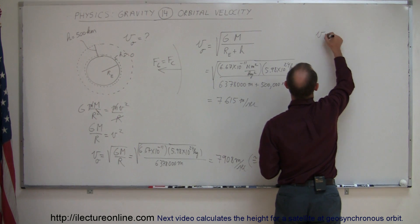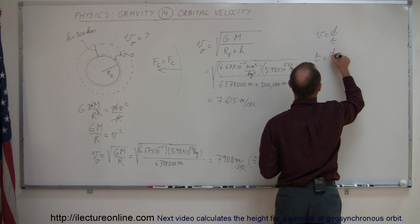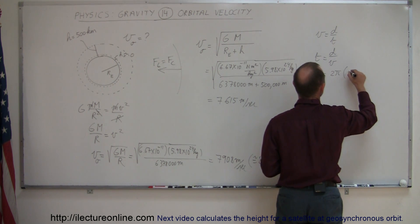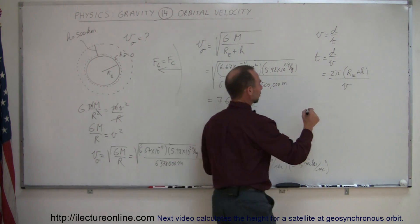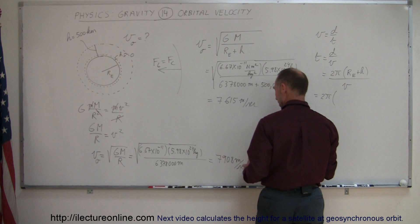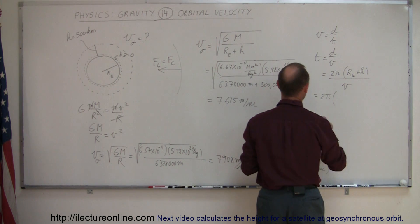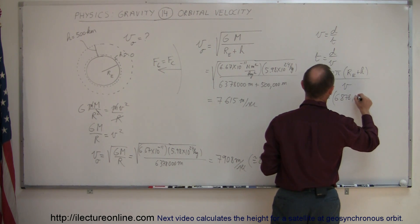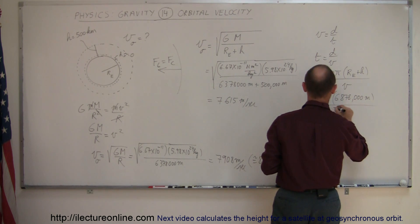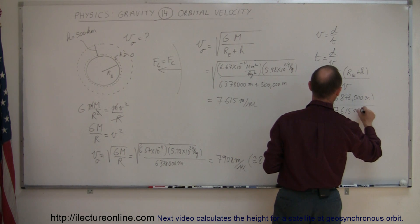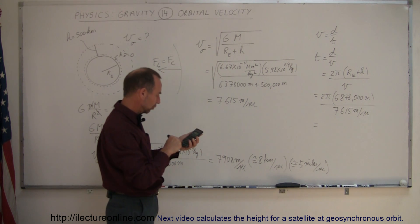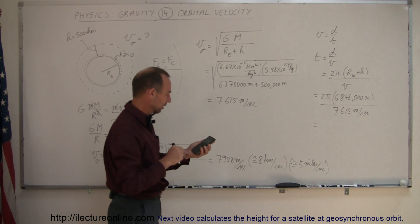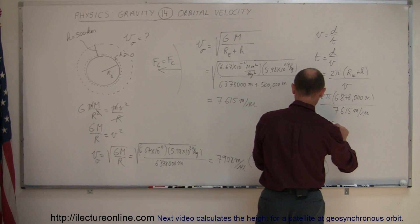We can say that velocity is equal to distance divided by time, which means that time is equal to distance divided by velocity. The distance would be 2 pi times the radius - in this case the radius of the Earth plus the height of the orbit - divided by its velocity. We can plug in the numbers here. This would be equal to 2 pi times the total radius, the sum of those two right there, so it would be 6,878,000 meters divided by the velocity of 7,615 meters per second. Take the inverse of that times 2 times pi times 6,878,000, and that would be the total number of seconds: 5,675 seconds.